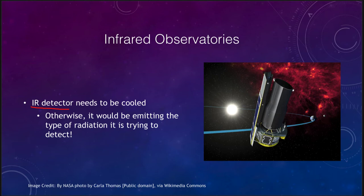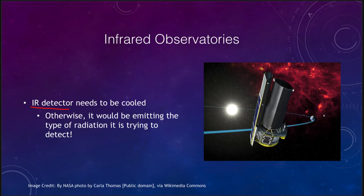If the detector is at a temperature where it is also giving off infrared radiation, it could essentially be glowing in the very light it is trying to detect. Just as a CCD glowing in visible light would be overwhelmed by its own light, the same applies here. So the infrared detector must be cooled using things like liquid nitrogen to bring it down to very cold temperatures so it does not emit much infrared. This is one of the big problems with infrared observatories that radio telescopes and optical telescopes generally do not face, since mirrors and CCDs do not give off visible light.